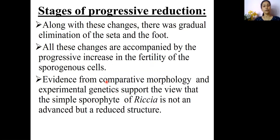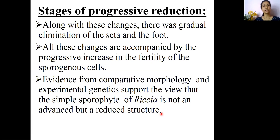All these changes are accompanied by a progressive increase in the fertility of the sporogenous cells. However, evidence from comparative morphology and experimental genetics has shown that the simple sporophyte of Riccia is not an advanced structure as proposed by this progressive reduction theory, but rather a reduced structure. This concludes the discussion on the evolution of the sporophytic structure in bryophytic plants.